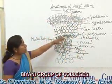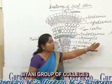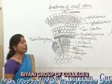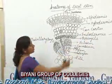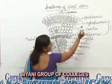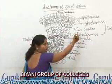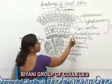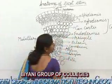Next to epidermis is cortex. Cortex is differentiated into three regions. The upper is hypodermis, middle is general cortex, and the innermost layer is endodermis.